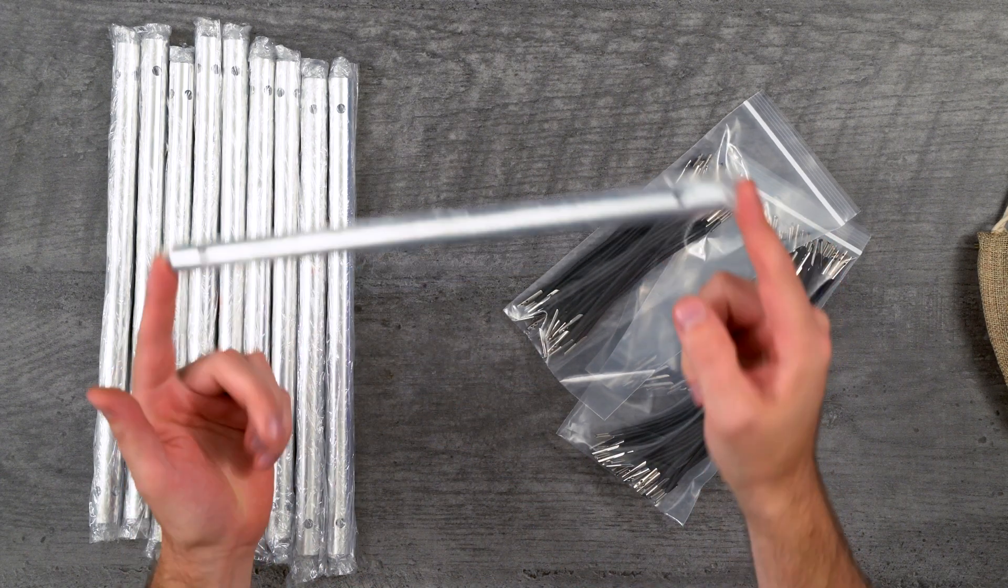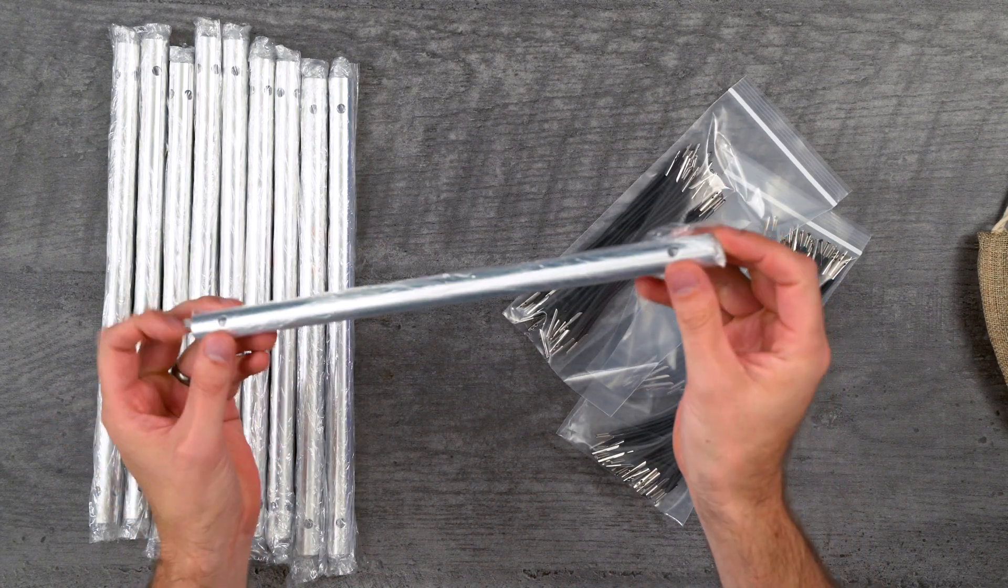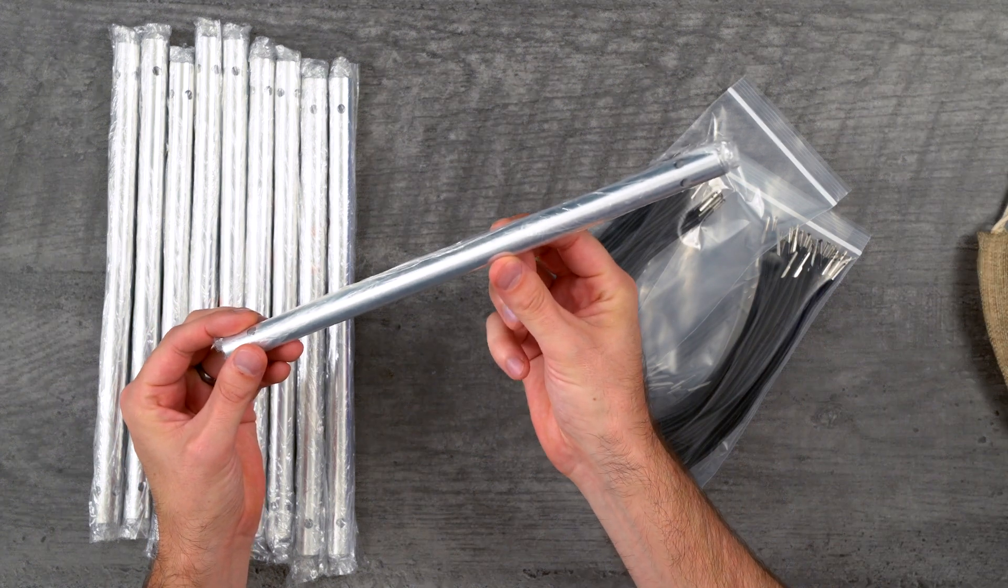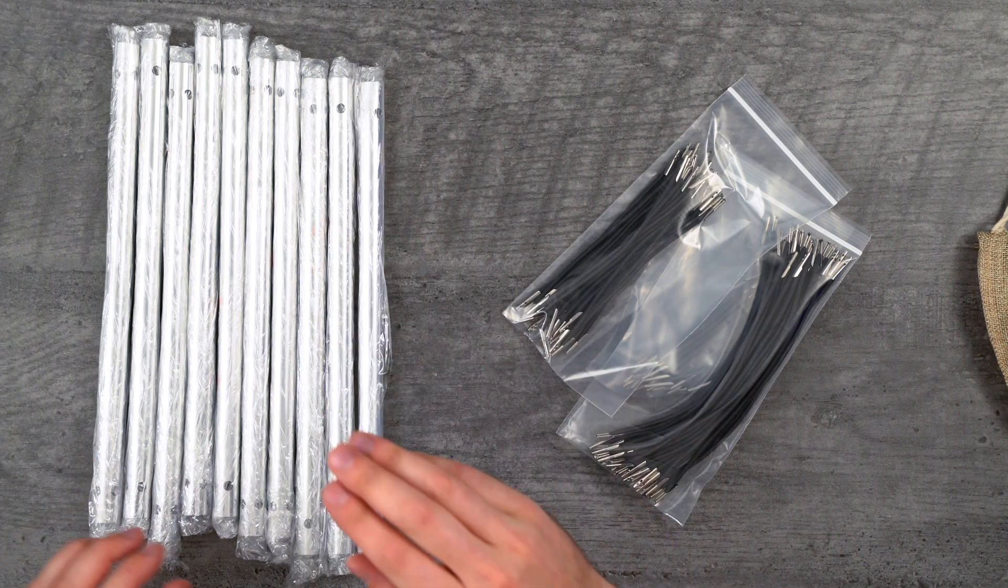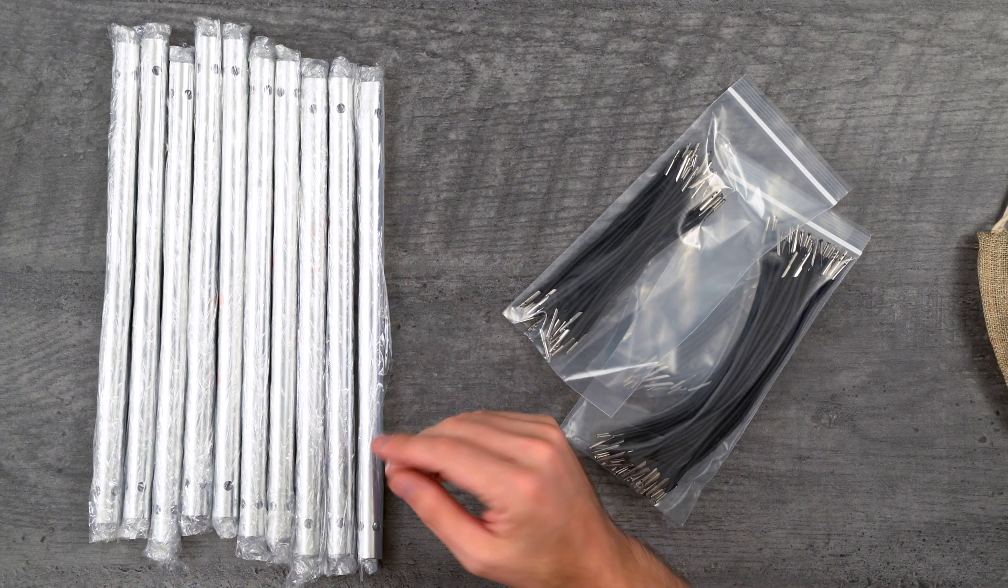Each of the tubes is 300 millimeters long. It's 15 millimeters in diameter, and it's got four holes drilled in each end. They're made out of aluminum, polished, natural color aluminum.